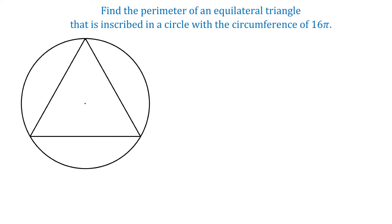In an equilateral triangle, all three sides are the same, so if we could find the length of one side, then the other two sides will have the same length. Because we are given the circumference of the circle, we can start the problem by finding the radius of this circle.